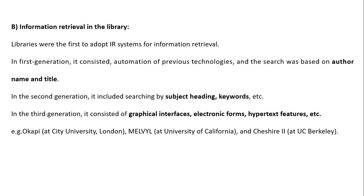IR in libraries: libraries were the first to adopt IR systems. In the first generation, automation of previous technologies was done and search was built on author name and title. In the second generation, searching by subject heading and keyword was introduced. In the third generation, graphical interfaces, electronic forms, and hypertext features were included.